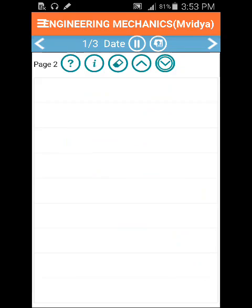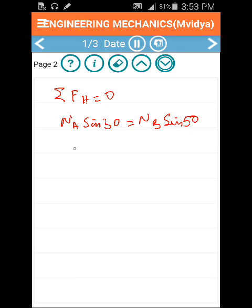Now balancing the vertical and horizontal components, we will start with the horizontal component. To maintain equilibrium we have summation of the horizontal components is 0. So NA sin 30 equals NB sin 50. So NA is equal to 1.5321 NB. That is my first equation.